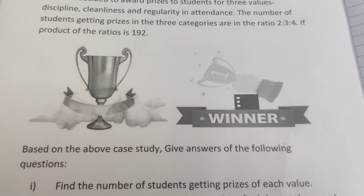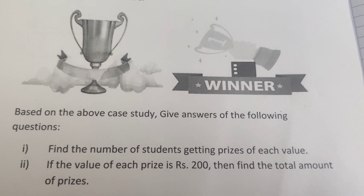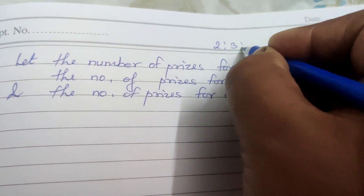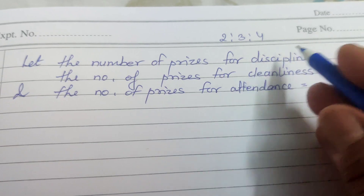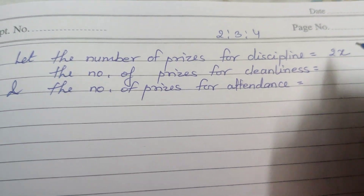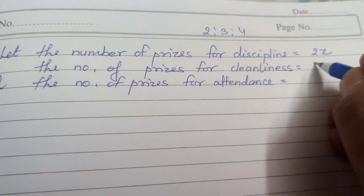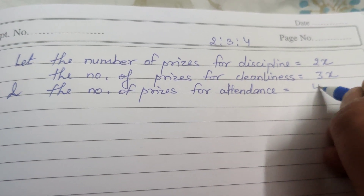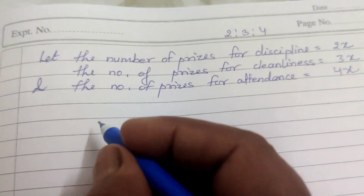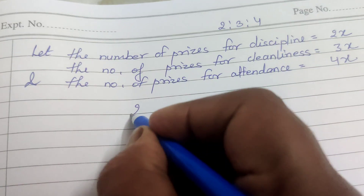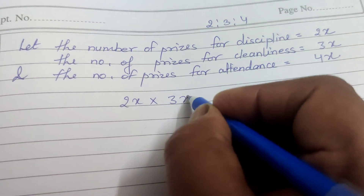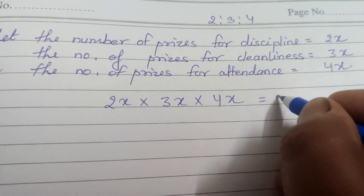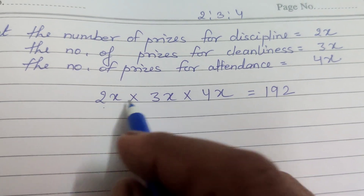The ratio of prizes is given as 2:3:4. Let the number of prizes for discipline be 2x, the number of prizes for cleanliness be 3x, and the number of prizes for attendance be 4x. According to the question, the product of all three numbers of prizes equals 192.